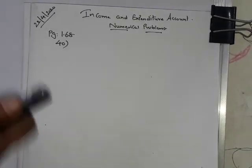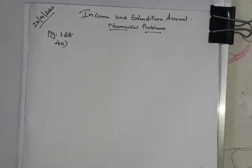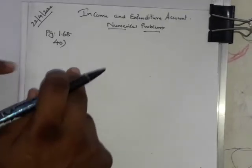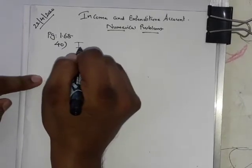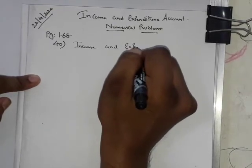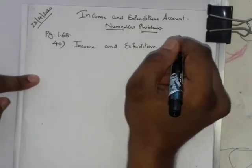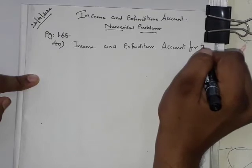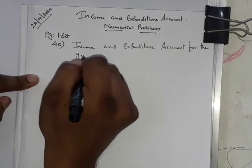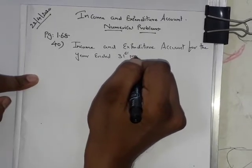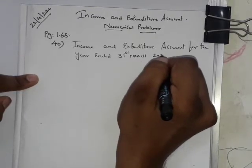Now let's start working on our income and expenditure account. We will come to know whether we are ending up in a surplus or a deficit. You have to write the heading: Income and Expenditure Account for the year ended 31st March 2020.